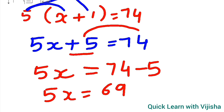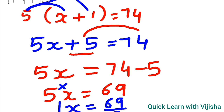In the last step, 5 is in multiplication form so it moves to the other side as division, giving x equals 69 upon 5. It doesn't simplify to a whole number, so the value for x is 69 upon 5. This is how we solve equations in one variable. Thanks for watching!